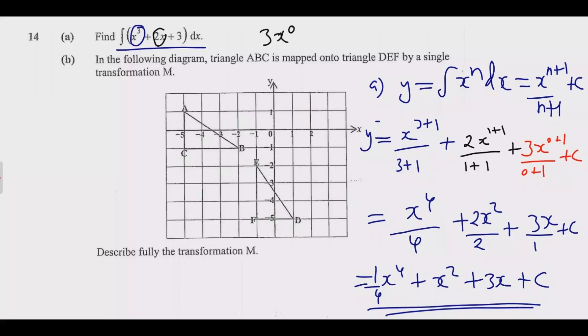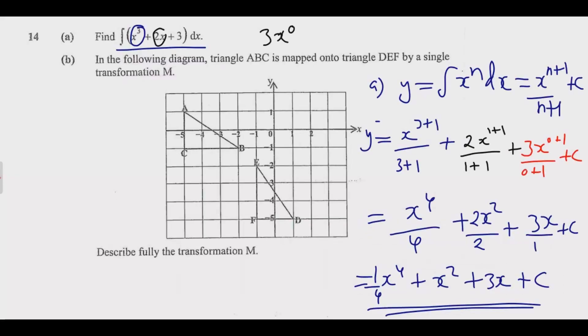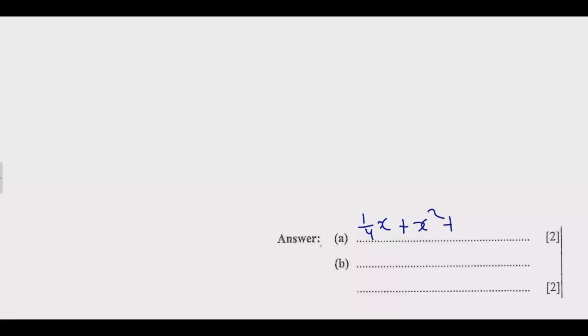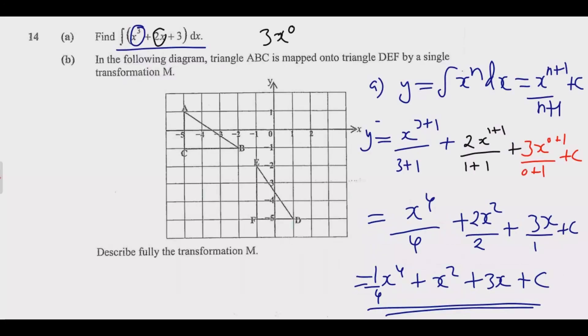Once you do this you end up getting these two good marks. So we are saying 1 over 4 x⁴ plus x² plus 3x plus c. Let us look at question b. Question b reads: In the following diagram, triangle ABC is mapped onto triangle DEF by a single transformation M. Describe fully transformation M.